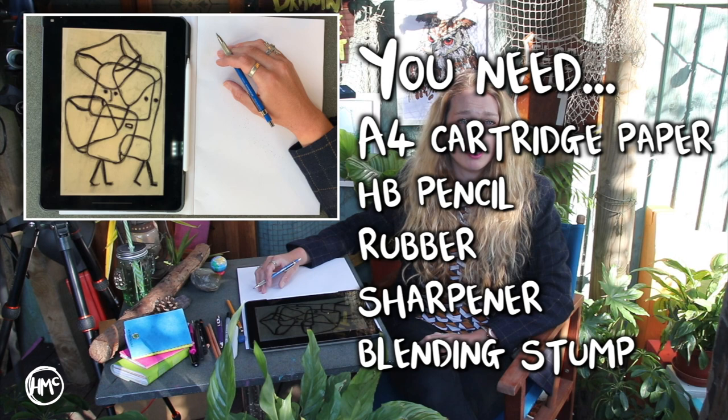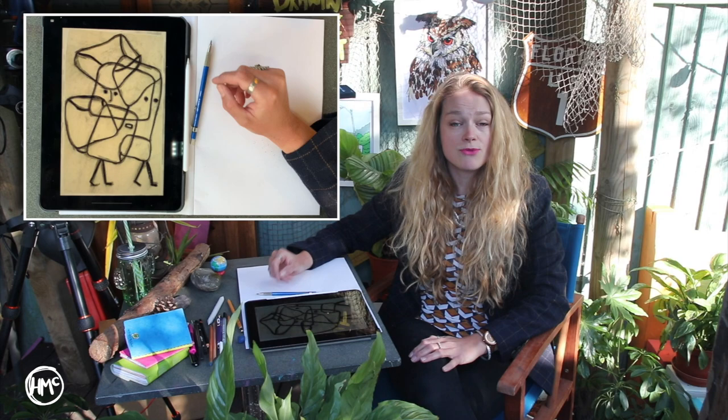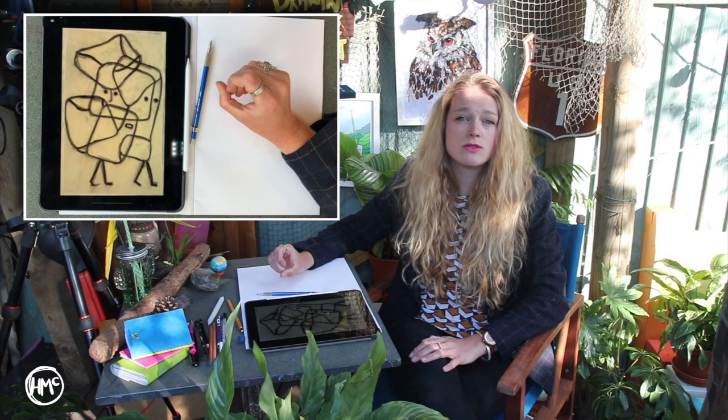So you will need a pencil, a sharpener, a rubber, white A4 paper and I'm also going to be using a blending stump today but you could also use a cotton bud or a rolled up piece of paper. If you have your sketchbook with you that's great, but if you don't use a sheet of white A4 paper.